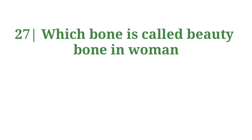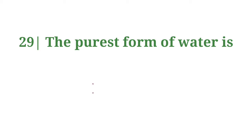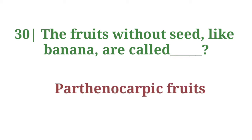Which bone is called the beauty bone in women? Answer: Clavicle. The normal pH of human blood is 7.4. The purest form of water is rainwater. Fruits without seeds, like banana, are called parthenocarpic fruits.